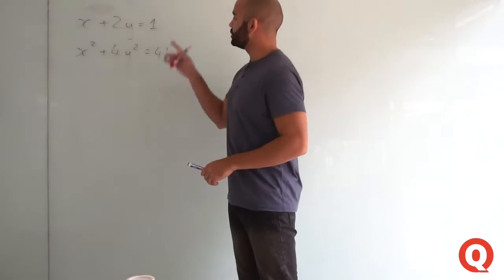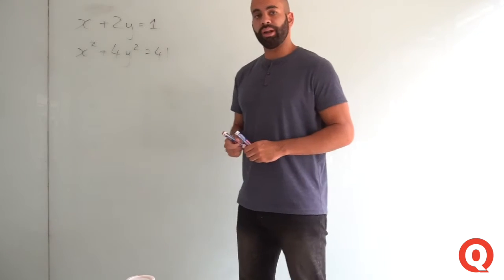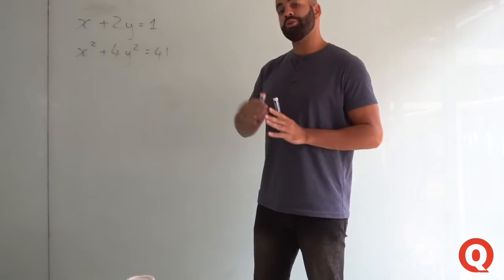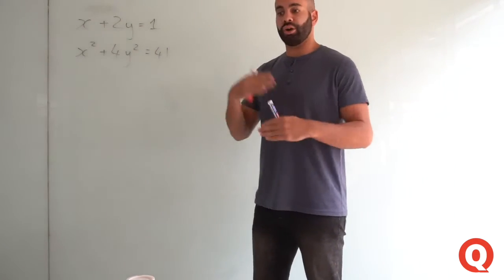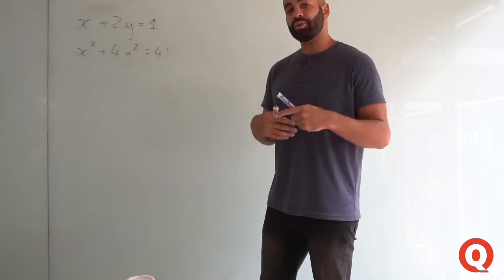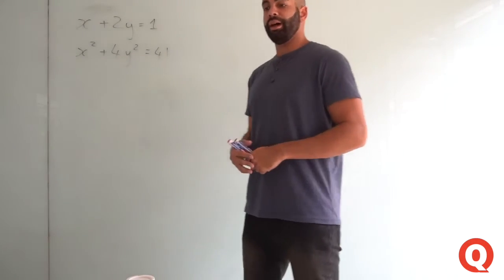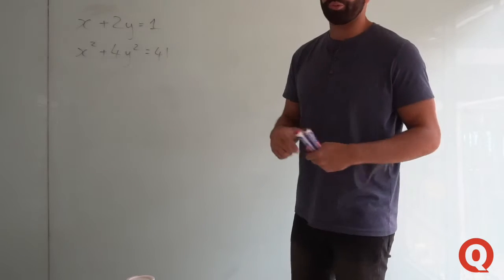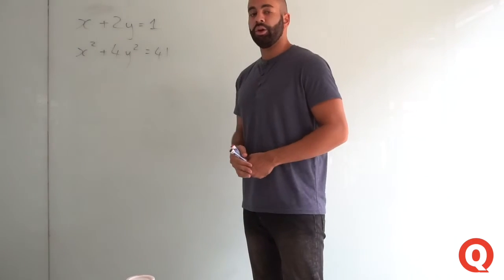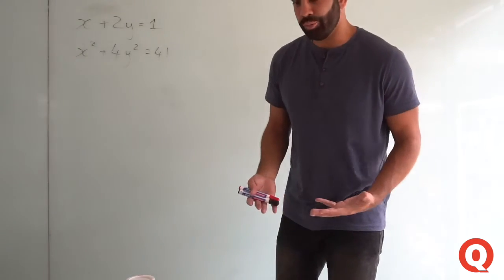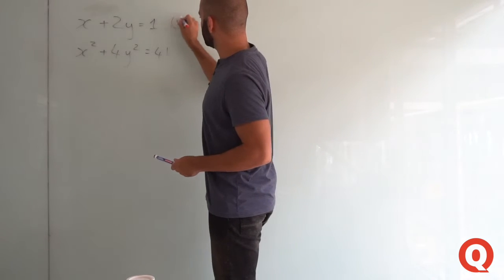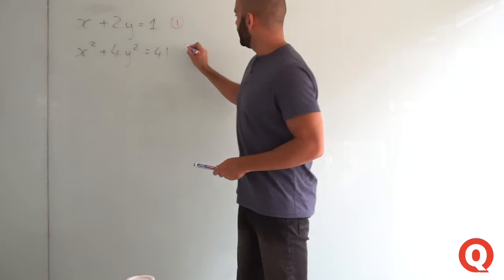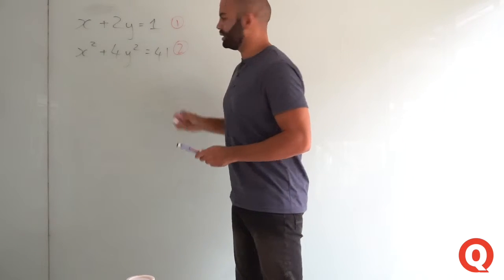The first step is to note which is equation one and which is equation two. It helps you keep track of things as you start working, and helps your teacher follow your thought process when marking, which means they're more likely to give you marks. I'm going to note this linear equation as equation one and the second equation as equation two.